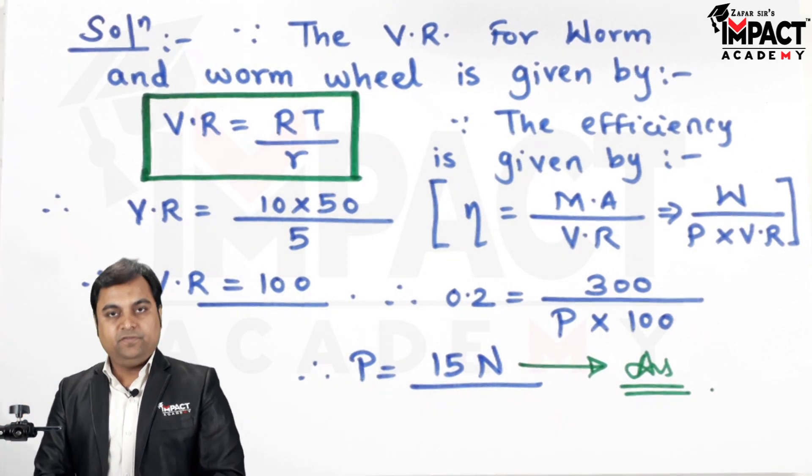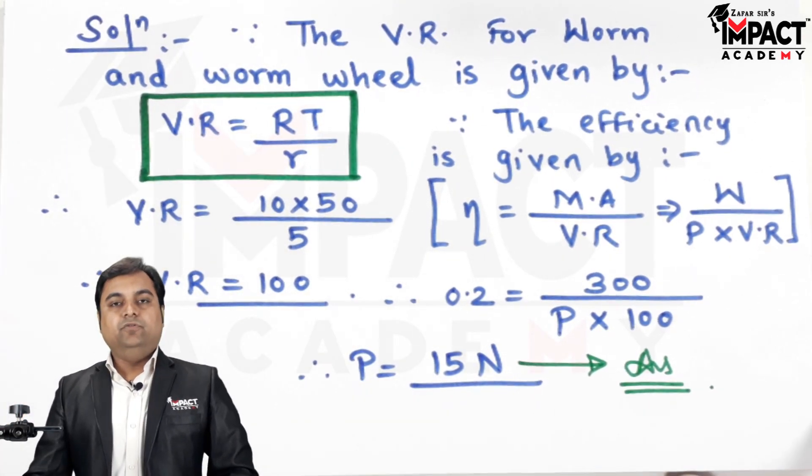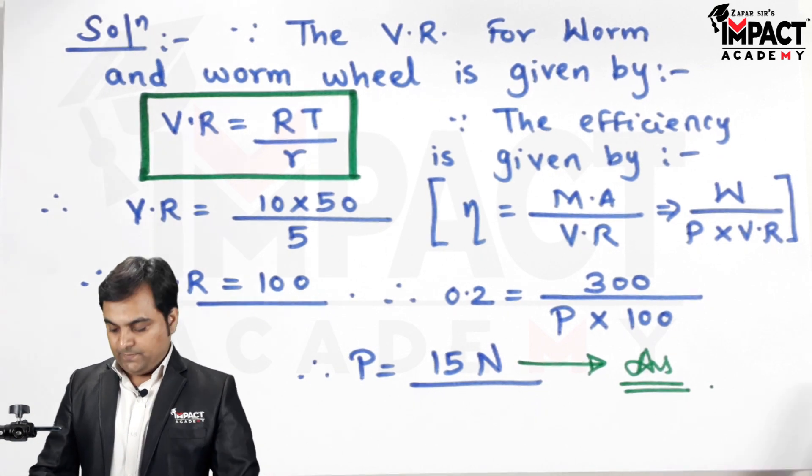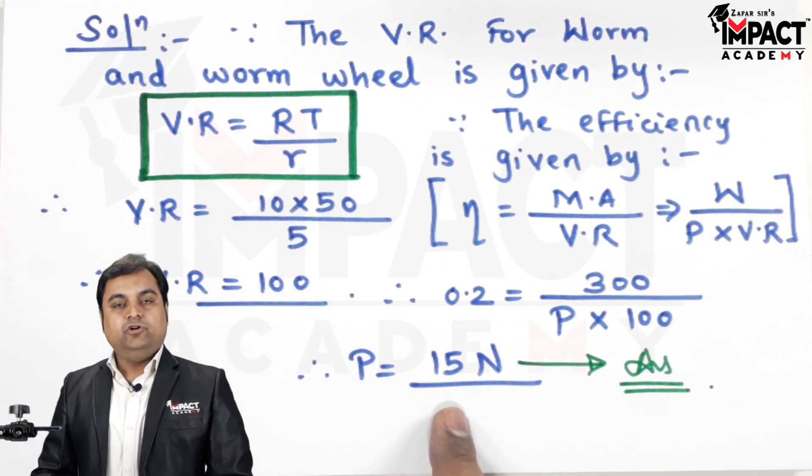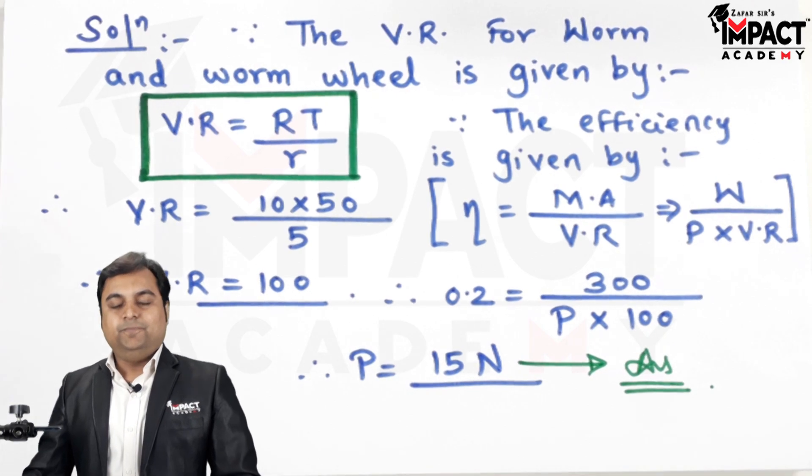So it means in order to lift a load of 300 Newton by using this worm and worm wheel arrangement, we would be requiring an effort of 15 Newton. So that was the problem.